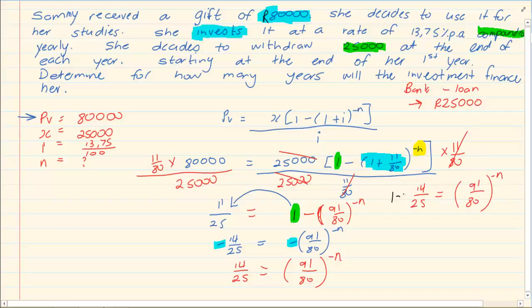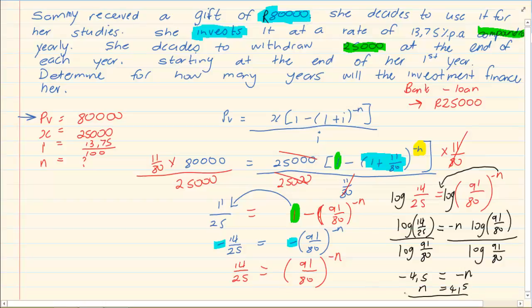We are going to put a log on both sides. The minus n comes forward. Minus n log 91 over 80 is equal to log 14 over 25. Divide by log 91 over 80. So, negative n is equal to negative 4.5. Giving us that n is equal to 4.5. So, how many years will her investment finance her? Her investment will finance her for 4 and a half years.